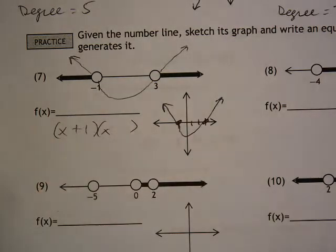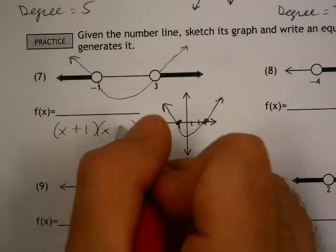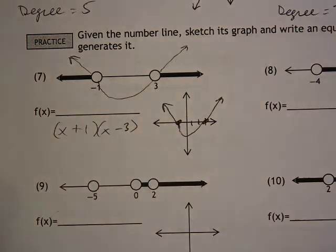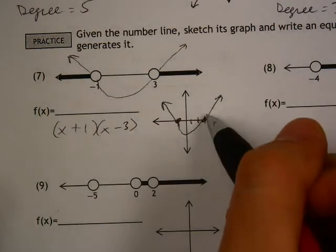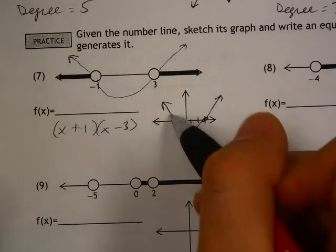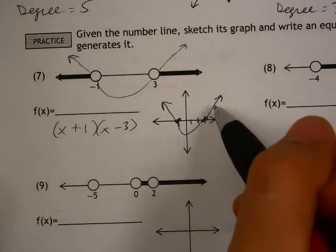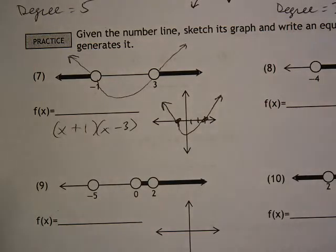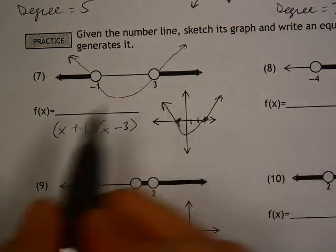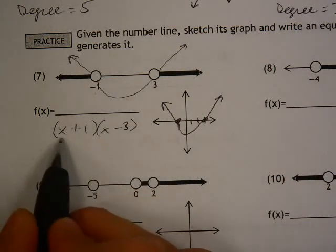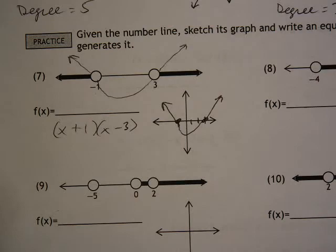And then to get these numbers inside, all we're doing is doing the opposite. Negative 1 becomes plus 1. Positive 3 becomes minus 3. And since the lines are just going straight through, there's no bouncing, which means there's no squares. It doesn't lay flat, so there's no cubes. So there is our equation, x plus 1 times x minus 3.